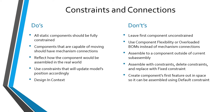Another good do is design in context — a situation where you need to design a component based on other components in the assembly. You can create the component in the context of the assembly and capture the necessary design references using data sharing features like copy geometry features and shrink wrap features, then design the component accordingly. By using those data sharing features, if the rest of the assembly ever changes, your component will update accordingly.